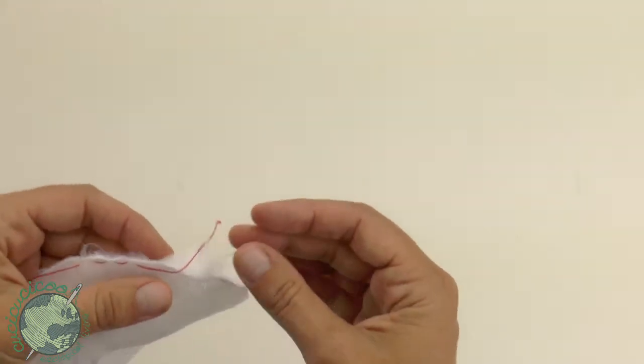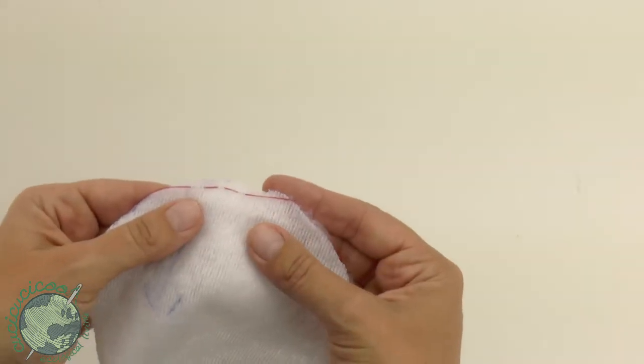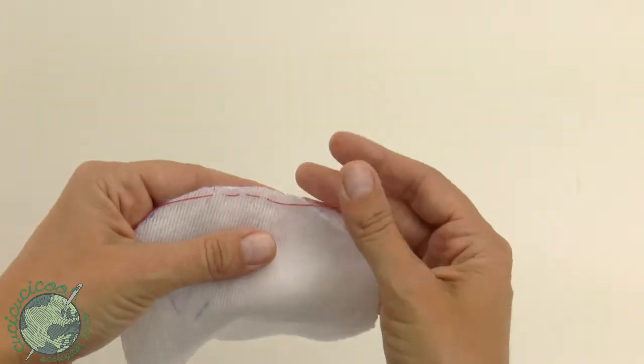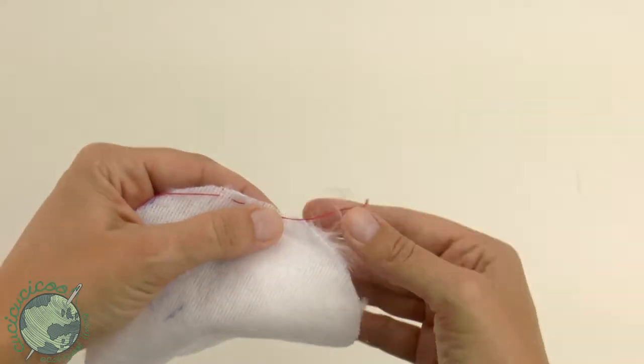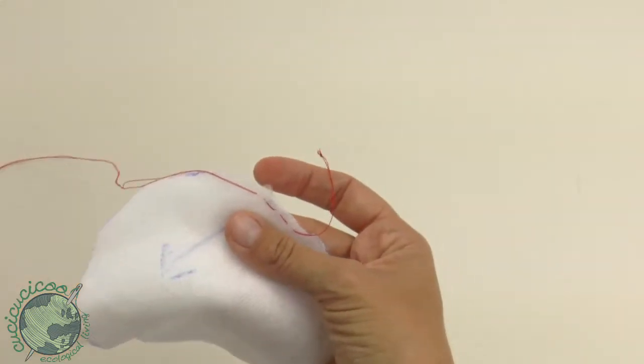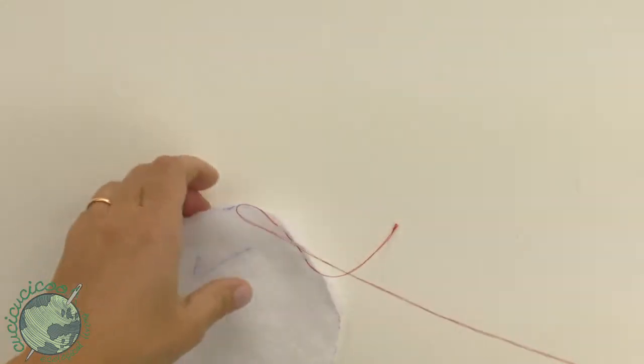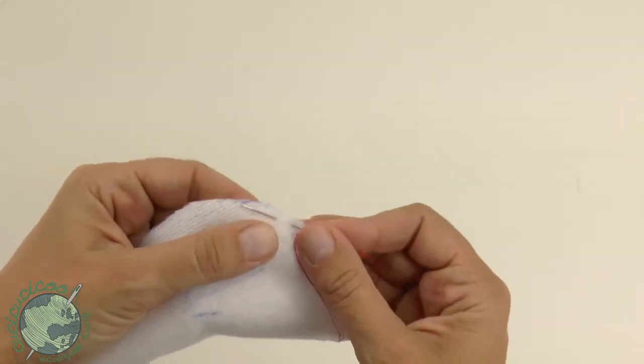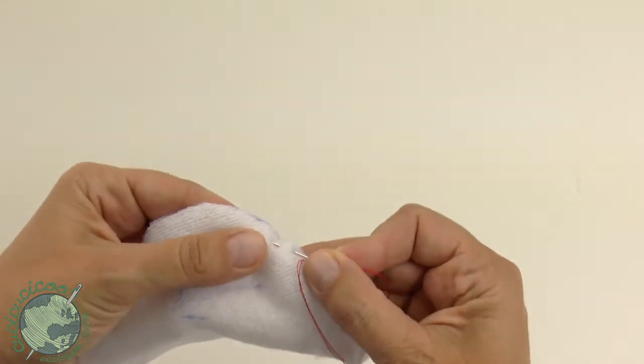Now again, normally you would be using a color that matches your thread. I'm using red because this way you can see it in the video. Now don't pull all the way through. Leave a bit of a tail and you'll see why in a little bit, but just continue. Just continue sewing your running stitch all the way around the edge of your circle.